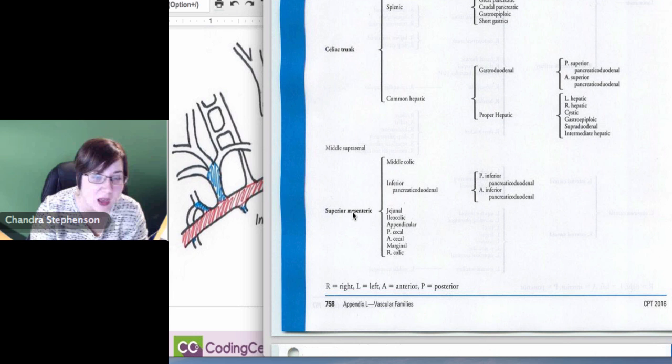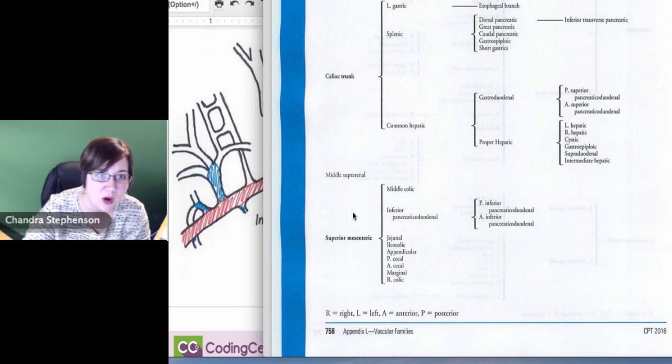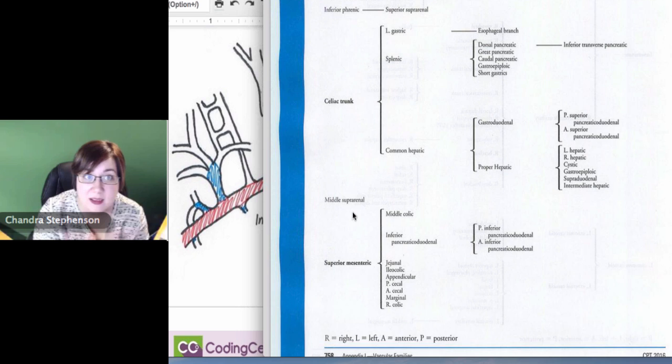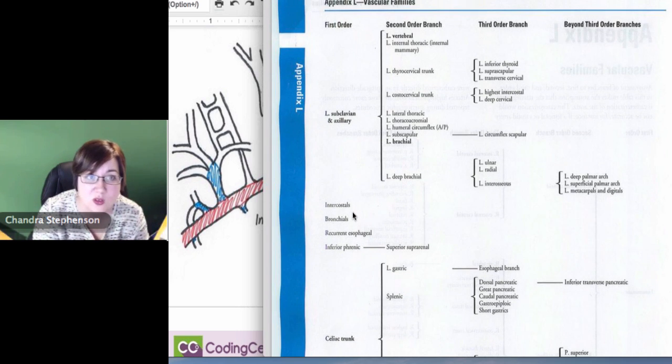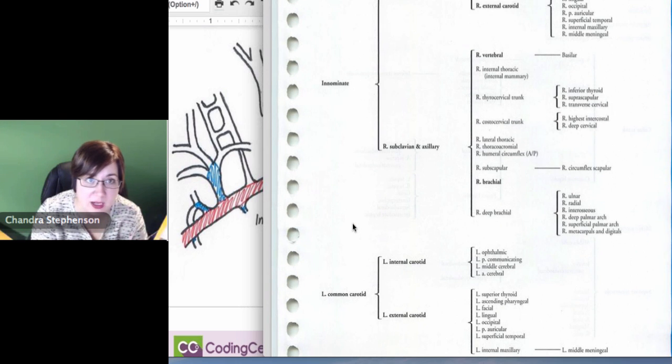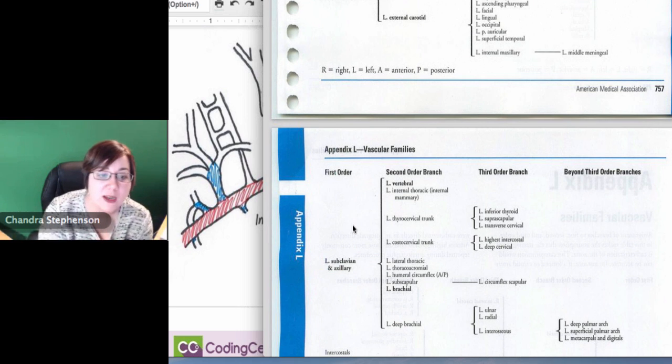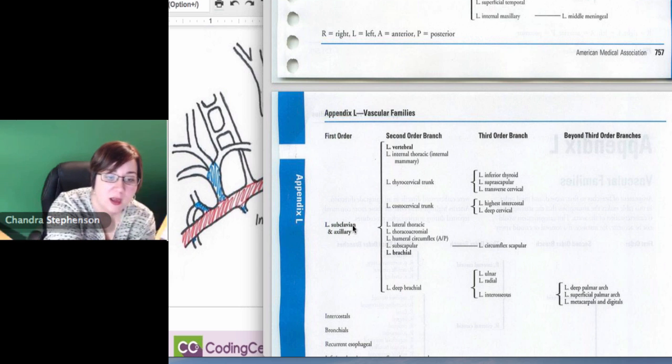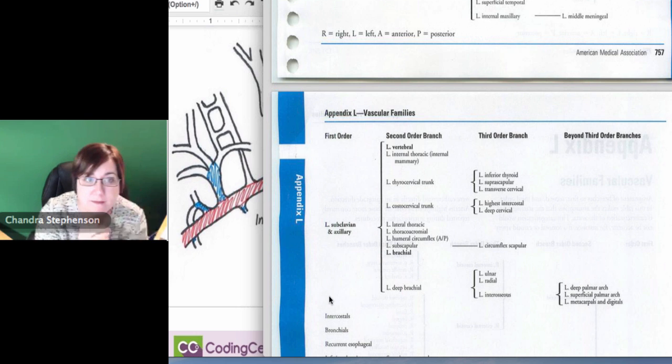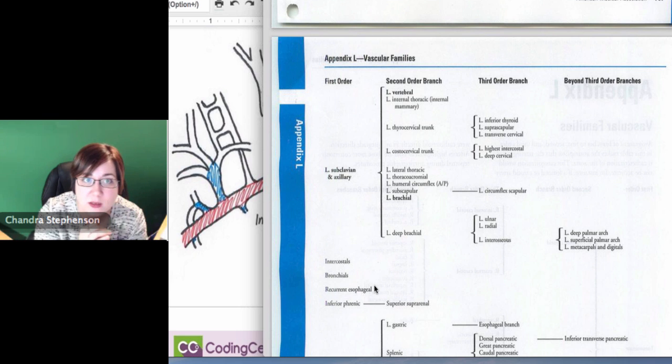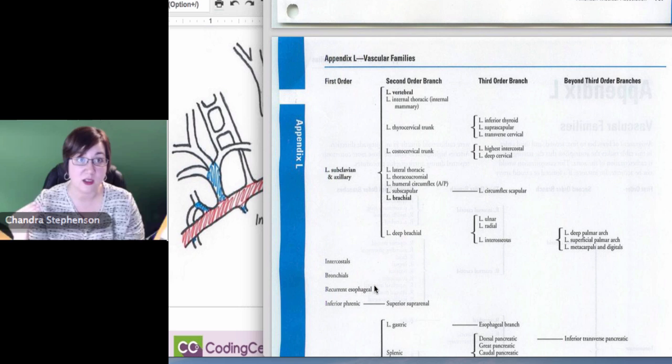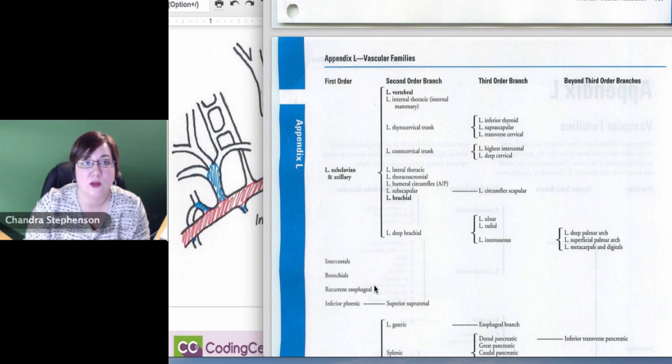Those are really the only two places that this tree comes into play. That's why you'll notice for all of the other ones, they don't really even give you the branches off of there or how far it breaks down because those codes aren't dependent upon that. Even for the renal arteries, it just says renal artery, and that's because the renal arteries have their own codes and they don't get into this first, second, third thing. It only applies to those five areas. Now, I've heard it taught above the diaphragm, below the diaphragm for those two groupings. That always stuck with me. I like that. And I actually draw that line right where you're at on that page between the bronchioles and the recurrent esophageal arteries - that's where the diaphragm is. So everything above the diaphragm is the 36215 through 36218 and below the diaphragm is the 36245 through 36248.